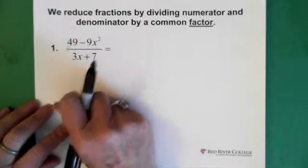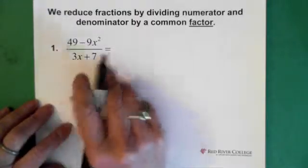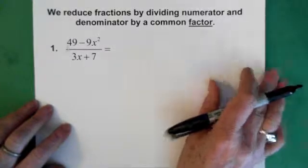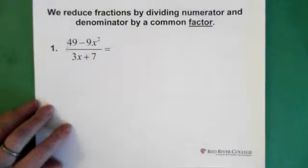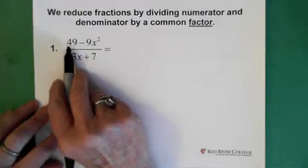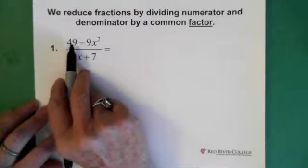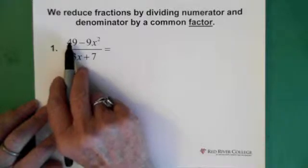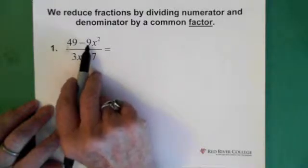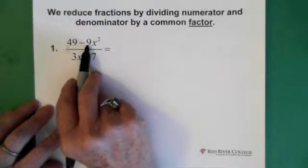What we're looking at here is the difference of squares, and if you're not sure how to factor difference of squares, just check out that video on difference of squares. When we factor difference of squares for this 49, which we know is a square because it's 7 squared, and this is a square as well, it's 3x squared.